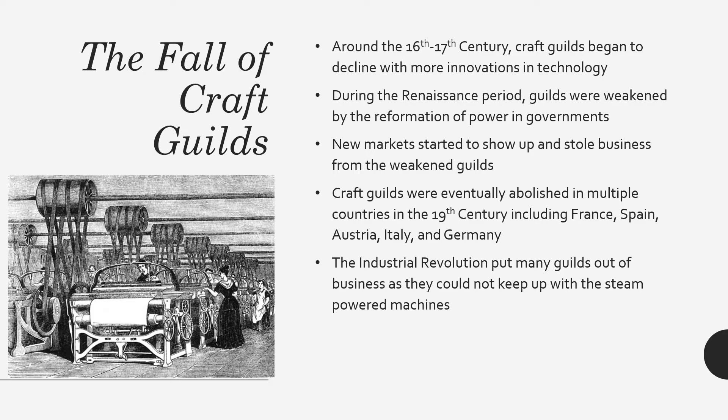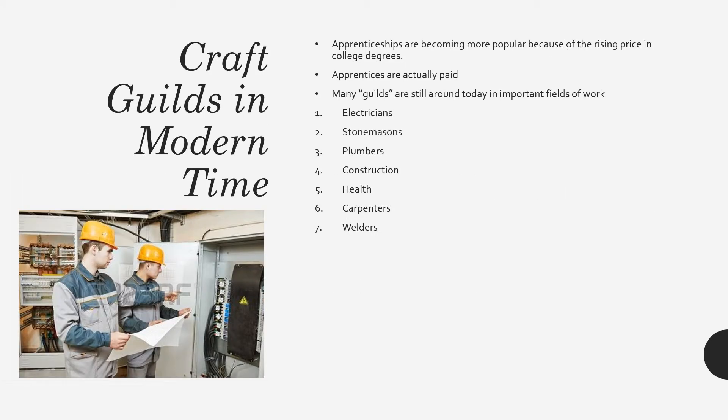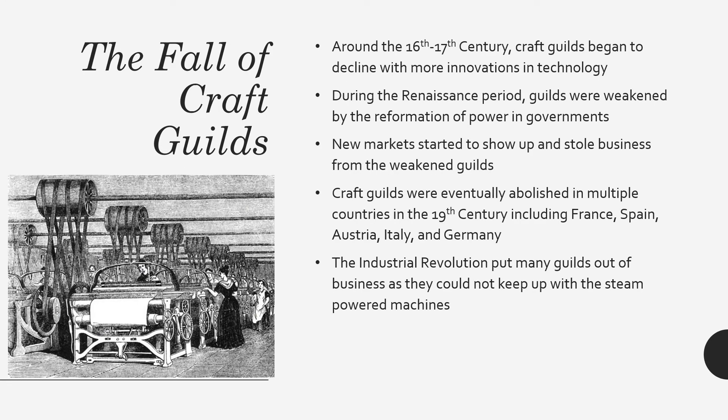The Industrial Revolution put many guilds out of business because they couldn't keep up. Master craftsmen mainly became foremen and may have run the plants of the businesses they already ran. Journeymen became paid laborers — if they were in the textile industry, they may have just become loom operators. Apprentices were essentially let go; if they had no skills, they couldn't really take over a job.